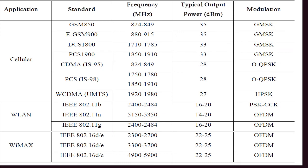Reviewing standards up to 4G: cellular and WLAN standards lie below 6 GHz, starting from 800 MHz for GSM, 1.8 GHz for PCS, 2.45 GHz for WCDMA, and WiMAX between 2 and 4 GHz. Output power ranges from 33 dBm for GSM down to 27 dBm for CDMA — roughly half a watt to one or two watts for handheld devices, 16–20 dBm for wireless LAN, and 22–25 dBm for WiMAX. Modulation schemes such as GMSK, CCK, and OFDM are important because they determine the signal characteristics, particularly peak-to-average power ratio.